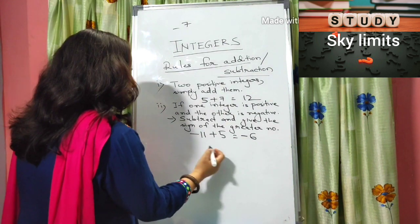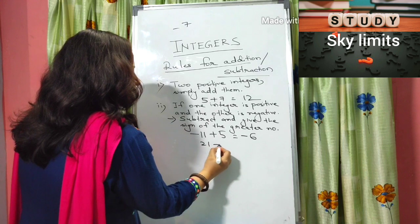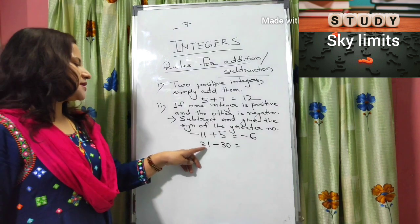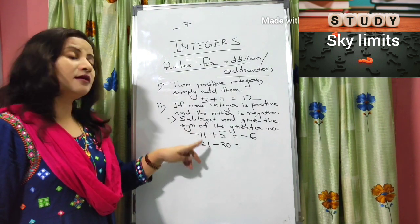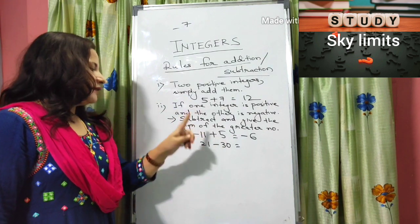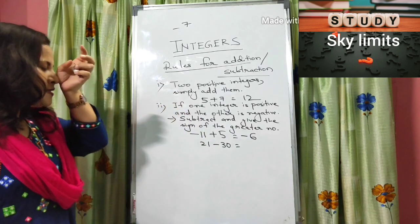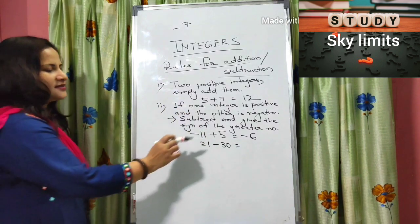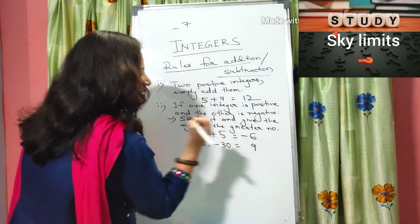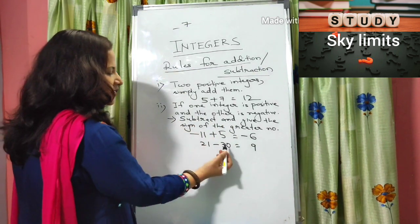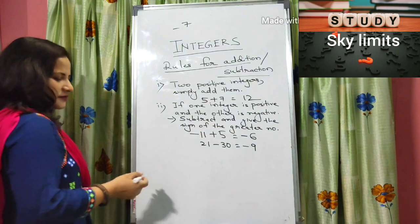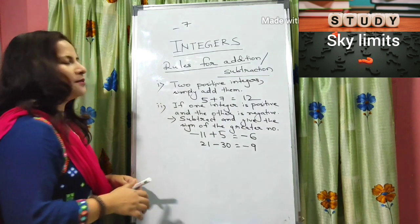Let me solve another example: 21 minus 30. There is no sign preceding 21 so it is a positive integer, and 30 is negative. Subtract 30 minus 21, which gives 9. Between 21 and 30, obviously 30 is greater and it carries the minus sign, so the answer is minus 9.